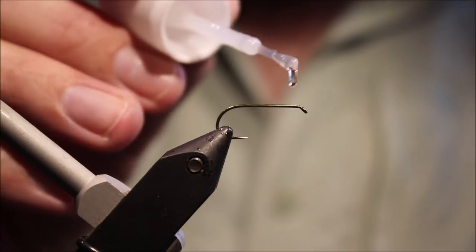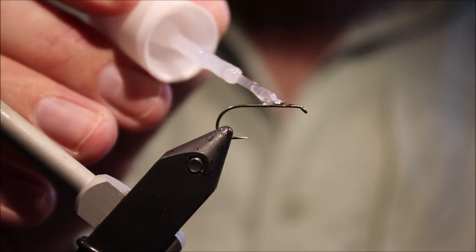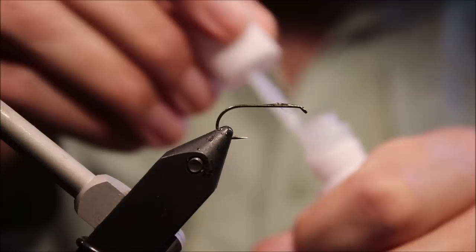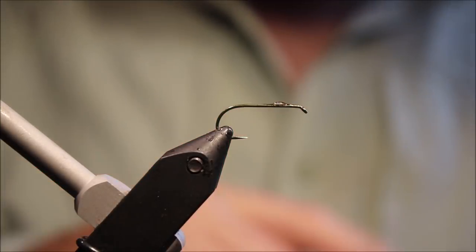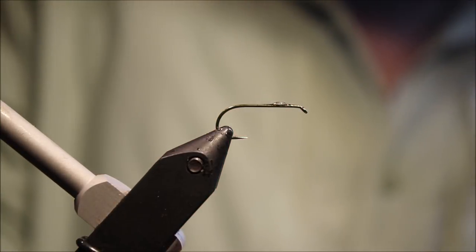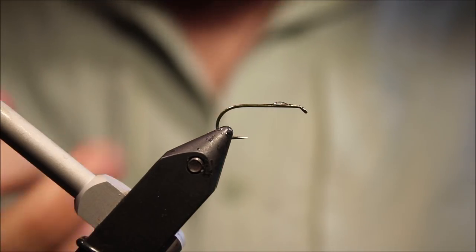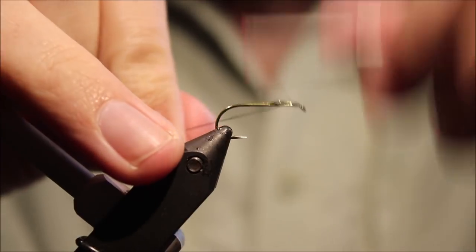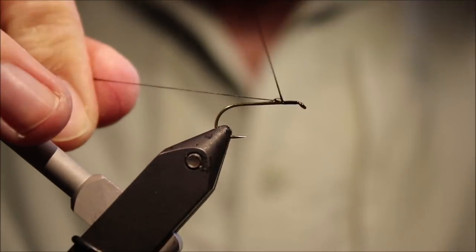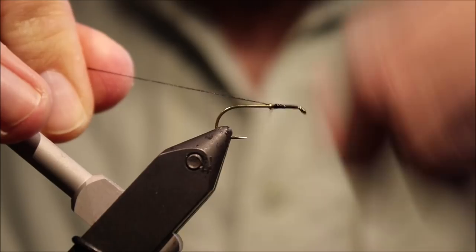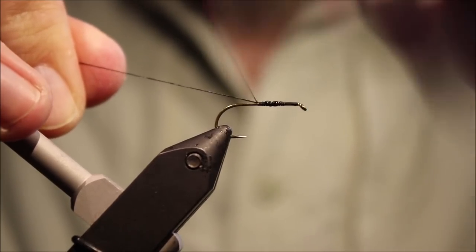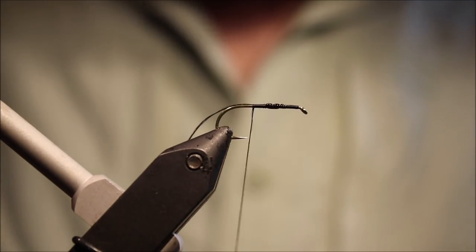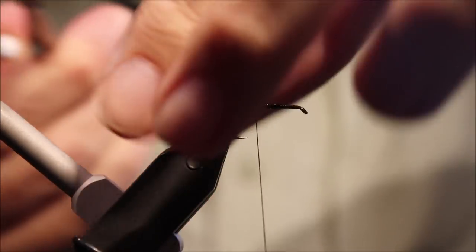So I've got my hook and my vise, and because this is a foam fly and it's a fairly minimal tie-in, I put a bit of super glue down first. And I start my thread at the eye, and I'm going to run a bed of thread and stop just ahead of the hook point, trim away my waste.